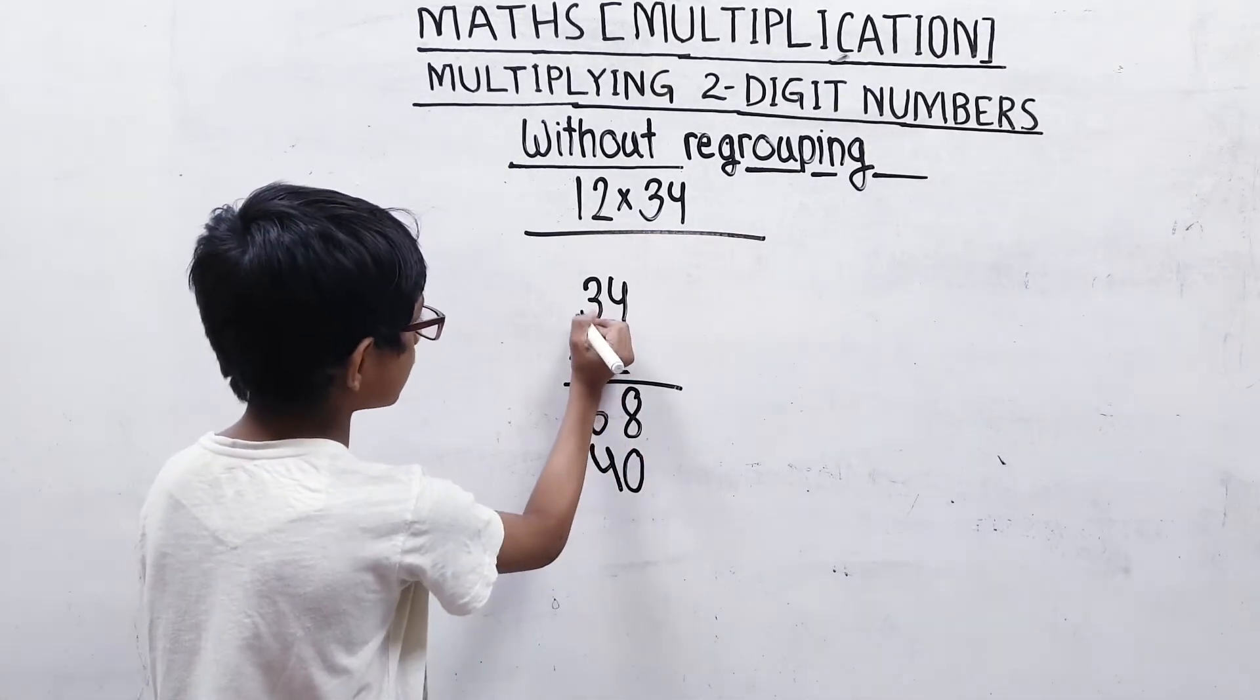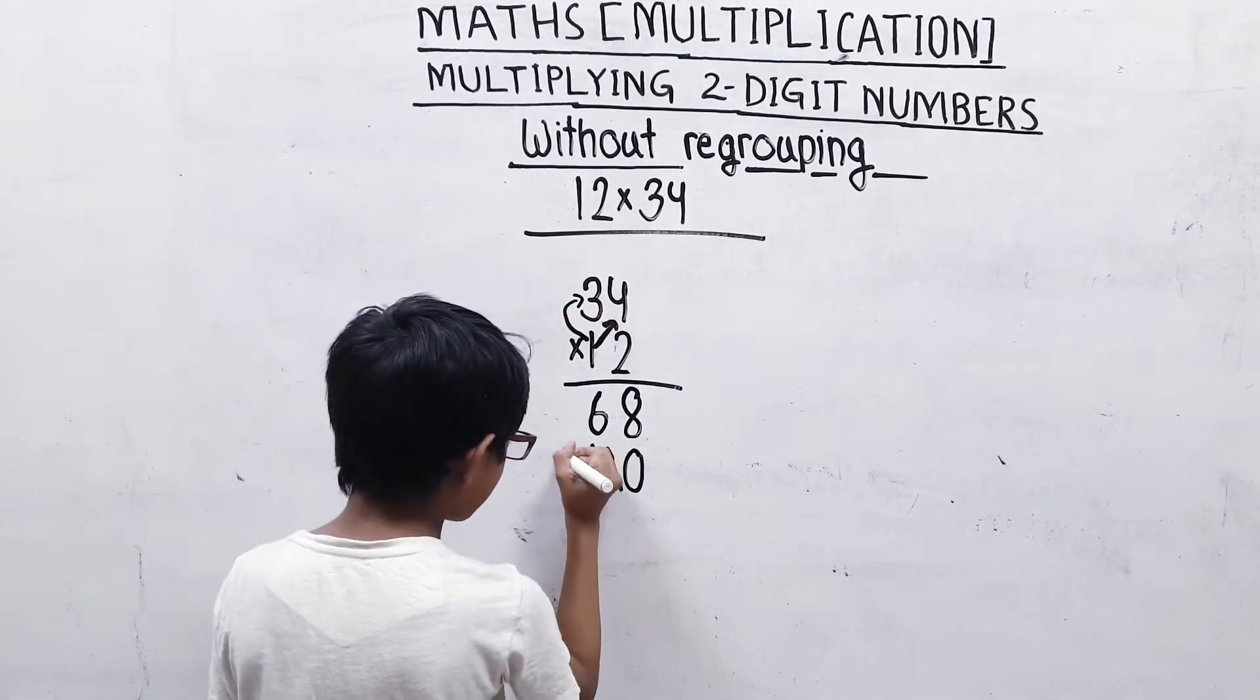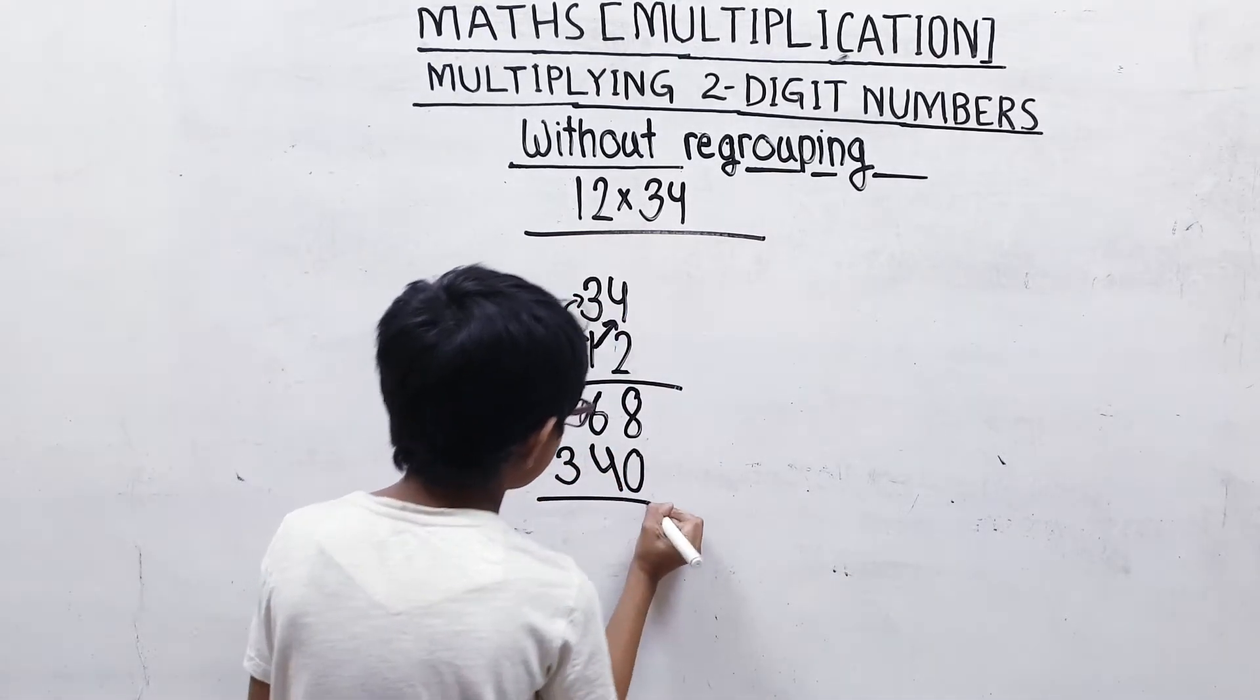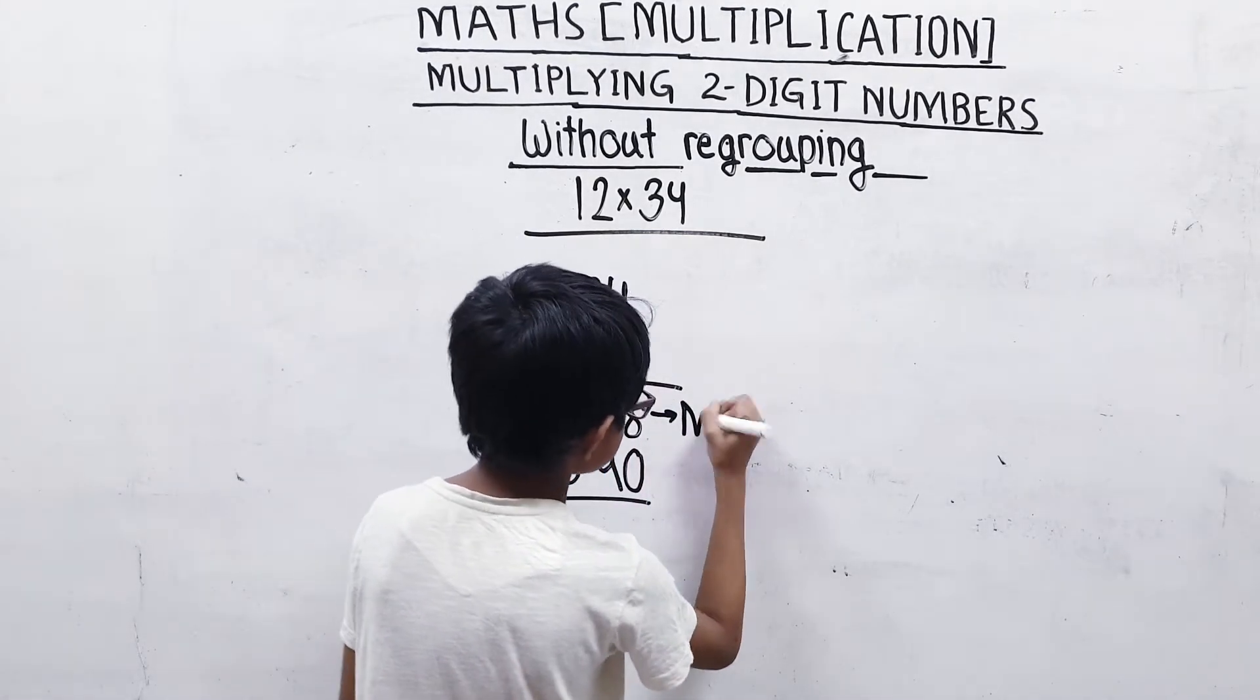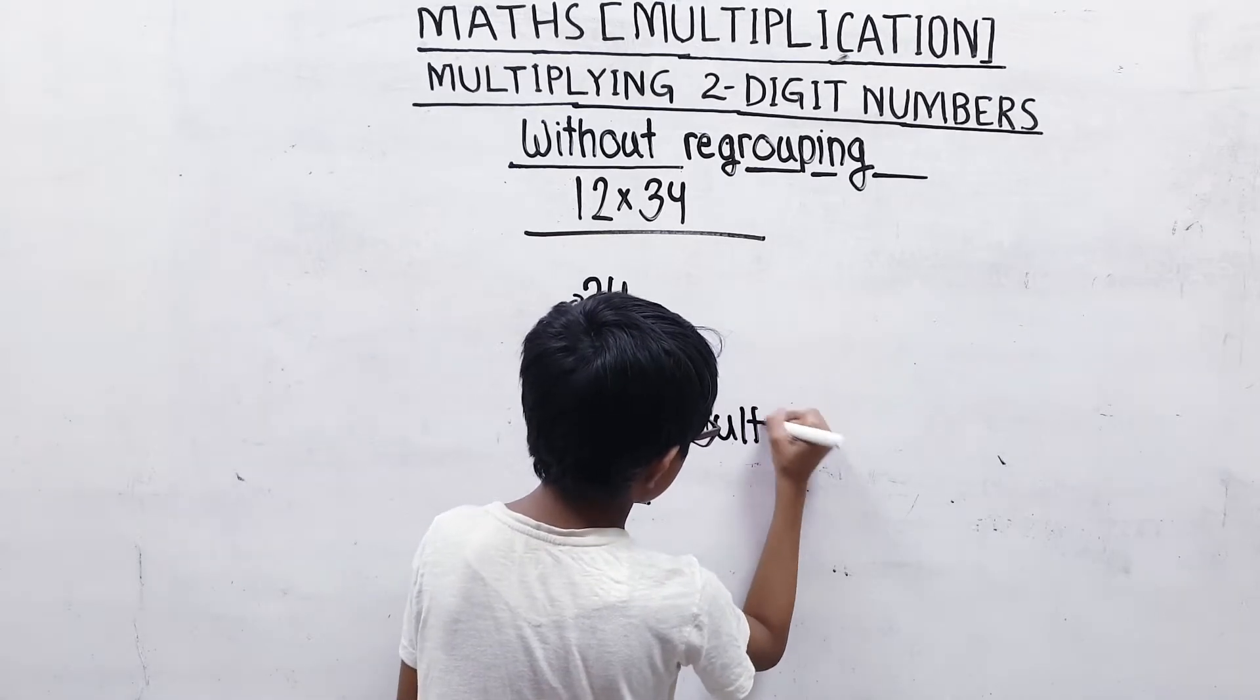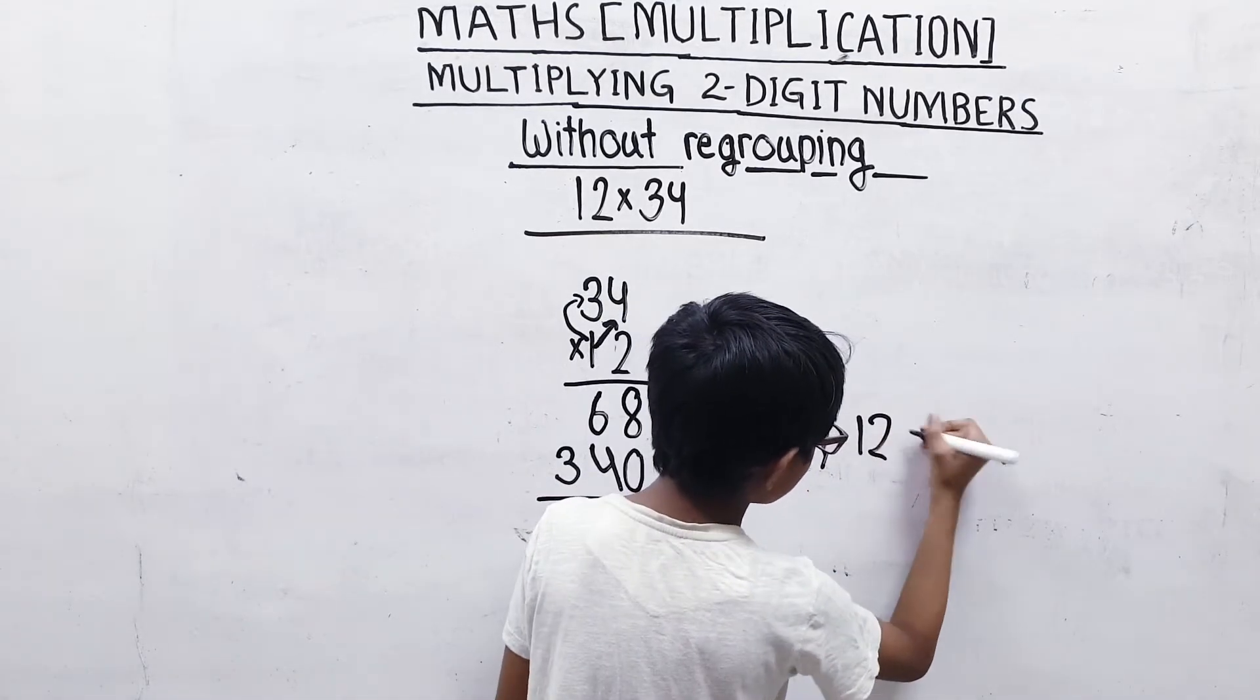Now, we will multiply 3 by 1. 3 times 1 is 3. This, we have multiplied 12 by the ones.